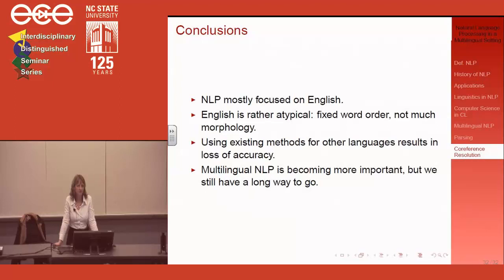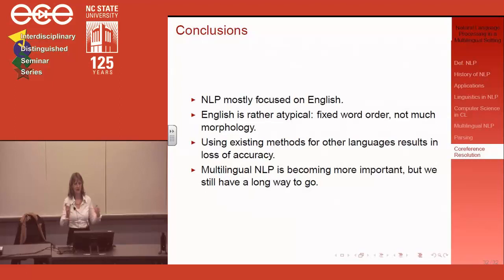Question from audience: Is there any work on text elaboration — given a compact complex paragraph, having the application explain it in a longer form? Response: There are some approaches to simplification — for example, for people with aphasia who have difficulty understanding passive sentences or relative clauses, applications try to convert passive sentences to active ones or extract relative clauses into separate sentences.